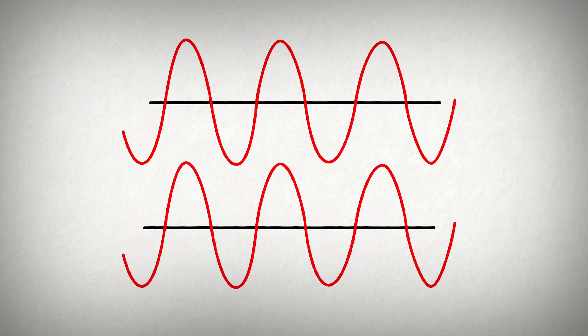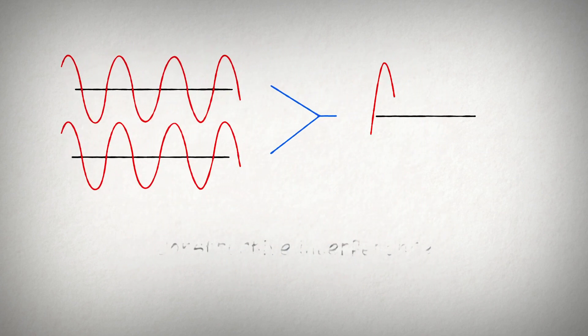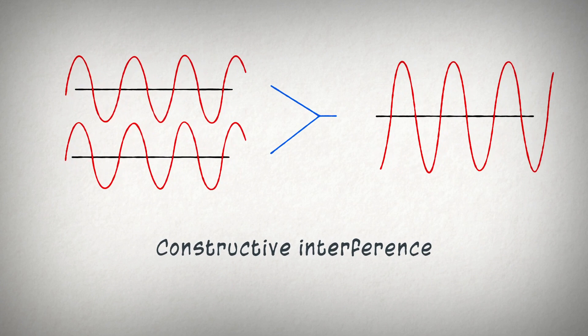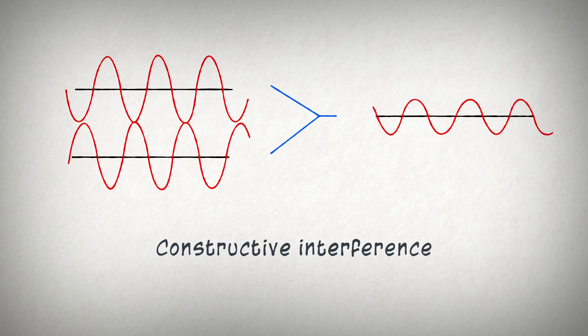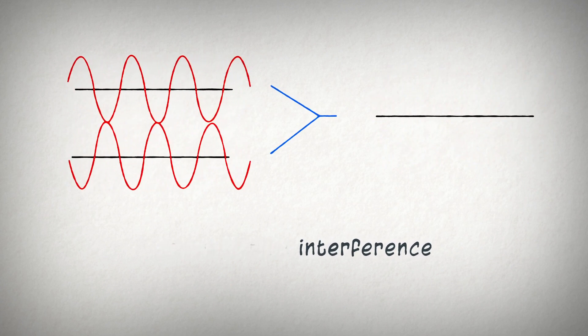If the waves are in alignment, the signal is amplified. This is called constructive interference. If the waves are out of alignment, the signal is destroyed. This is called destructive interference.